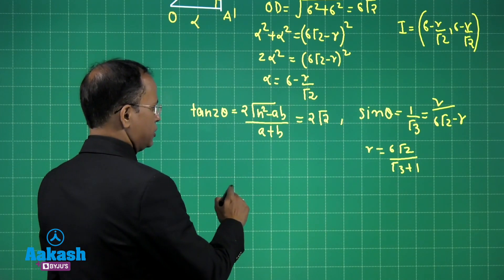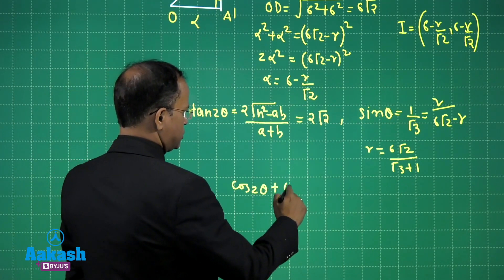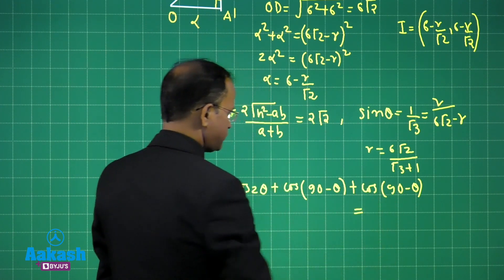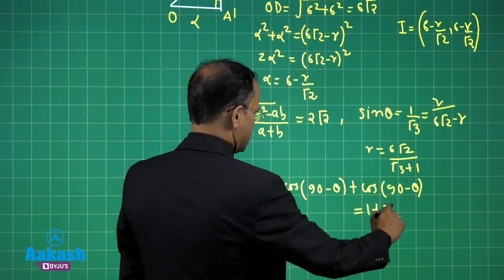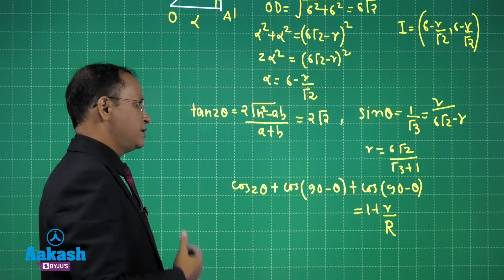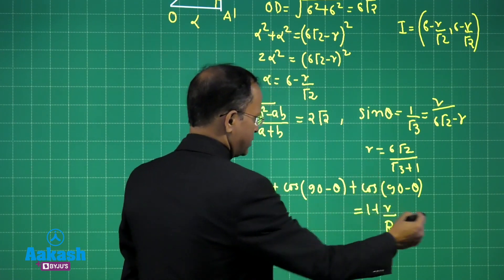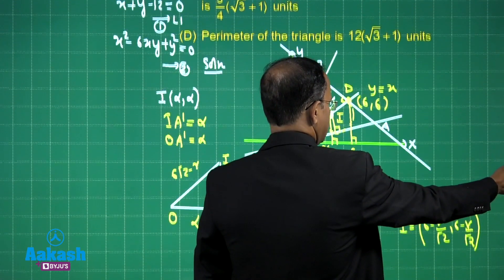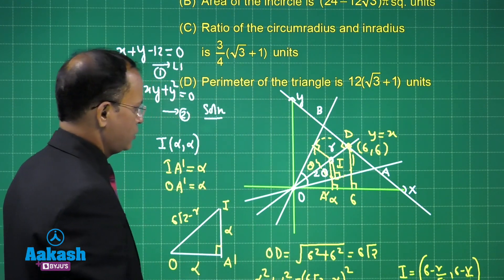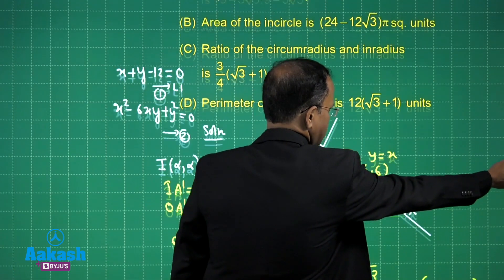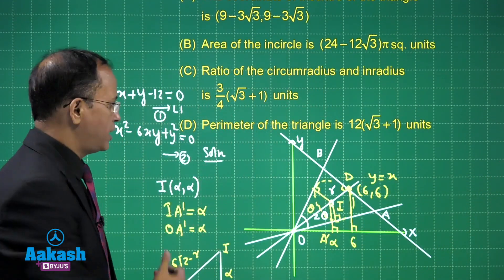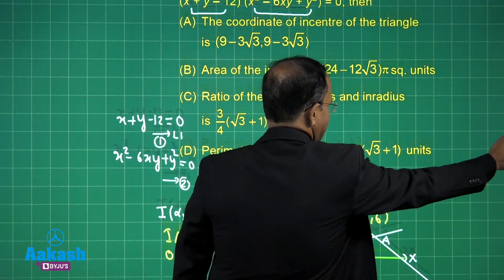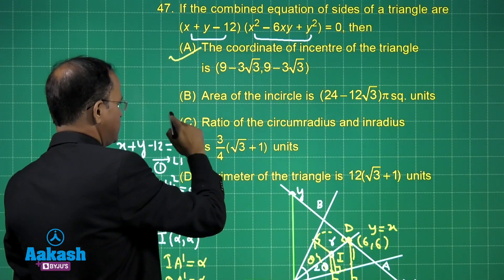We also have a relation: cos(2θ) + cos(90° − θ) + cos(90° − θ) = 1 + r/R, which gives the ratio of the inradius to the circumradius. All the parameters — area, perimeter, and sides — can be found using these formulas. The area formula and perimeter of the triangle are straightforward once you know the sides. Ultimately, options A, C, D are the correct answers for question 47.